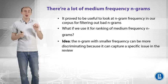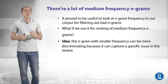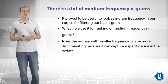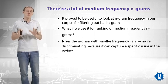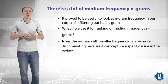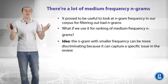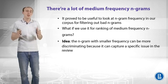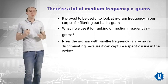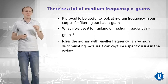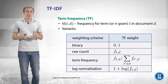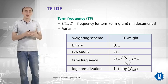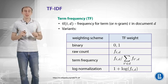What if we can use the same frequency for ranking medium-frequency n-grams? Maybe we can decide which medium-frequency n-gram is better based on that frequency. The idea is that an n-gram with smaller frequency can be more discriminating because it can capture a specific issue in the review. For example, somebody not happy with the Wi-Fi might write 'Wi-Fi breaks often', and the n-gram 'Wi-Fi breaks' won't be very frequent in the corpus but can highlight a specific issue. To utilize that idea, we introduce the notion of term frequency, denoted as tf — the frequency for term t in a document d.